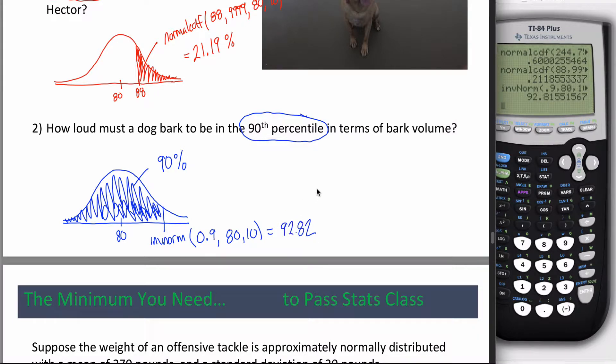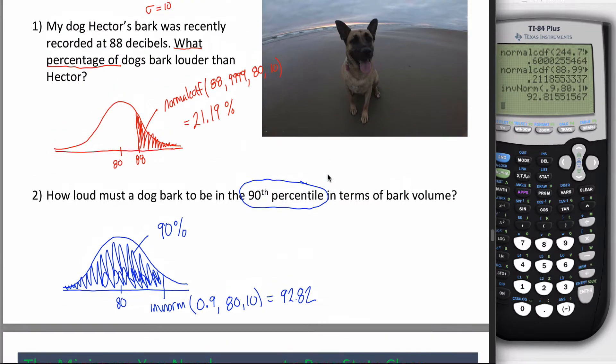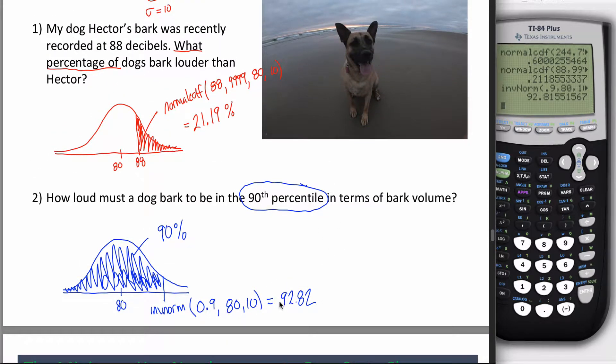Type all that in and your calculator spits out 92.82. You might have done that problem in the inverse norm section. But the key thing here is not to understand these arguments or get this number, it's to understand why one was normalCDF and why two was inverse norm. If you got that, that's exactly what we're going for in this video.